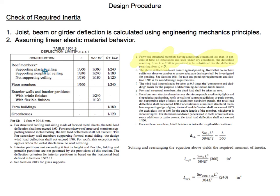For roof members: if the roof member is supporting a plaster ceiling, for live load use L over 360, and for dead load use L over 240. If it's not supporting a ceiling — such as in an attic where no one is living — you can use L over 180. If the attic is habitable and there is drywall on the rafters, then use L over 360, because if it deflects too much it's going to make the drywall crack.